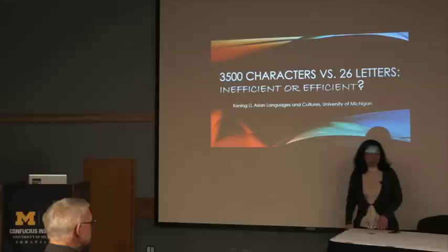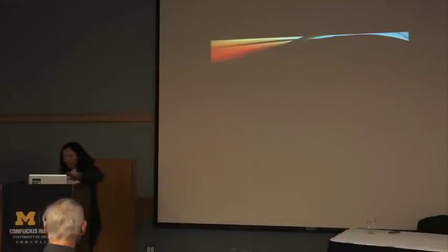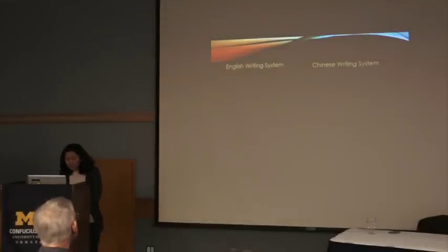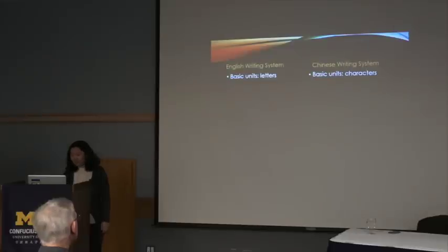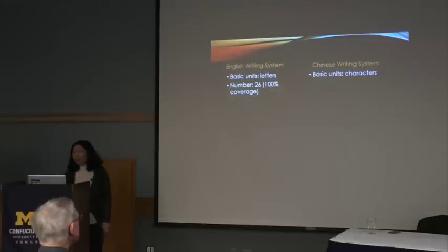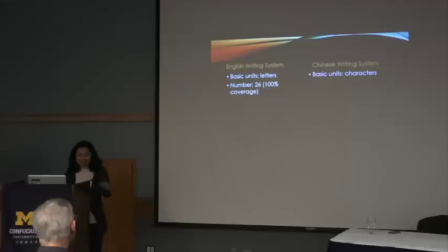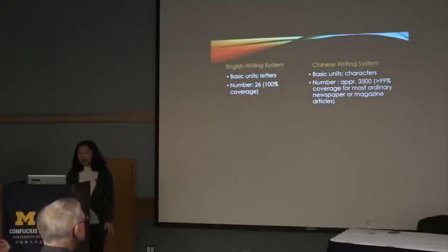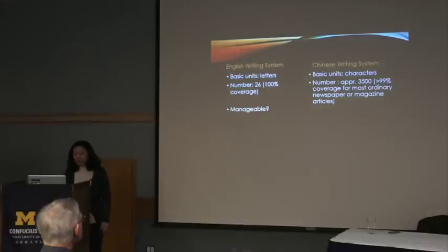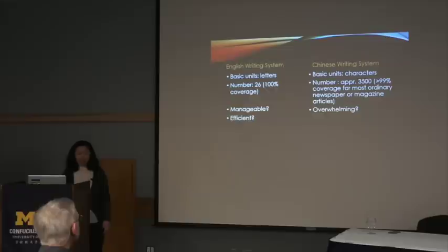That's the question I'd like to address today. Let's compare the writing systems. In English, the basic units are letters — 26 letters in the English alphabet, giving you 100% coverage of everything written. For Chinese, to have over 99% coverage of ordinary newspaper or magazine articles, you need about 3,500 characters. So English seems manageable and Chinese seems overwhelming — but is English efficient and Chinese inefficient?